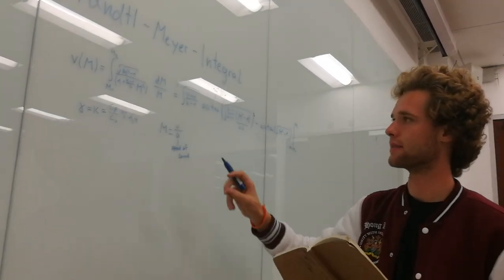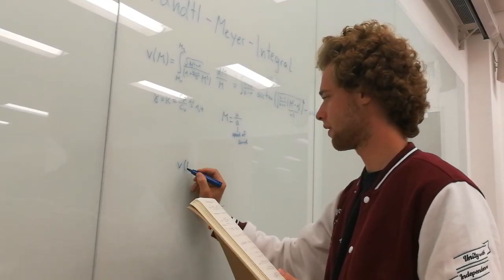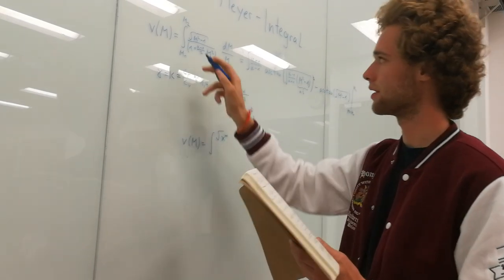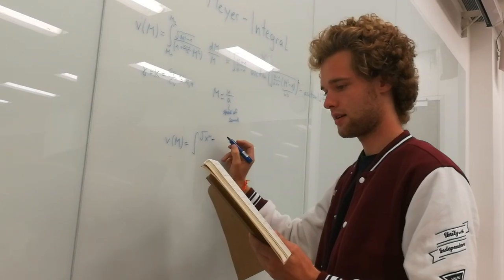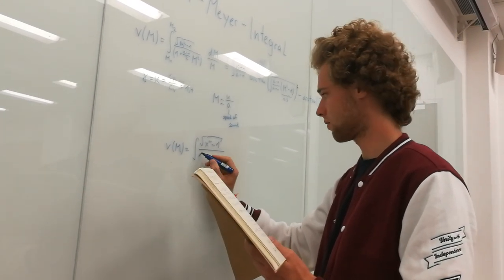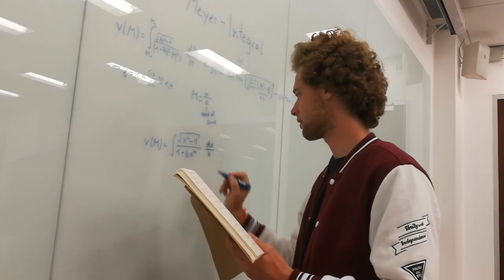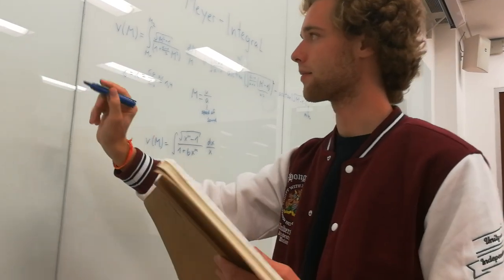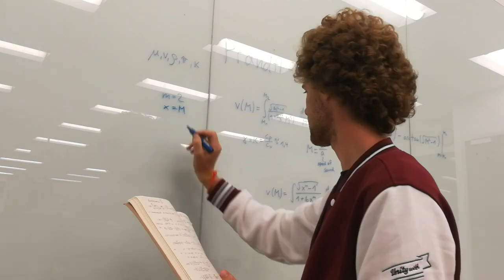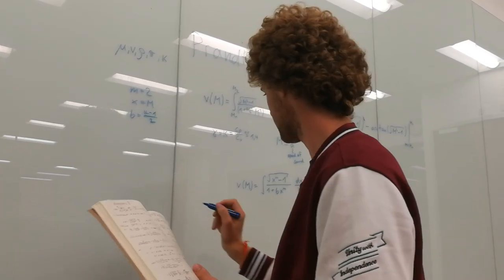So now this is the integral, and we can maybe write this in a more general way that also makes it easier to write. We could just write it as integral of, so I'll use x instead of m, x to the power of m, so here m is equal to 2, it's nothing to do with the mass, minus 1 over, and I'll use b instead of kappa minus 1 over 2. So it's 1 plus b times x to the m dx over x. So maybe let's keep this as a little note to the side: m equals 2, x equals capital M, b is kappa minus 1 over 2.